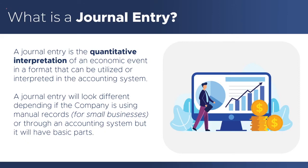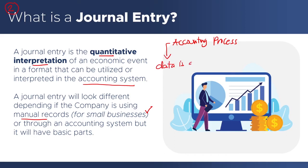The next thing you need to know about the double entry bookkeeping system is: what is a journal entry? A journal entry is the quantitative interpretation of an economic event in a format that can be utilized or interpreted in the accounting system. A journal entry will look different depending on whether the company is using manual records or an accounting system, but it will always have its basic parts. In the accounting process, when I said that data is aggregated, what I really mean is that all of the journal entries during the year are aggregated or added up from the beginning of the period to the end of the period in order for them to be summarized into a financial report. So what we are aggregating are mainly journal entries.